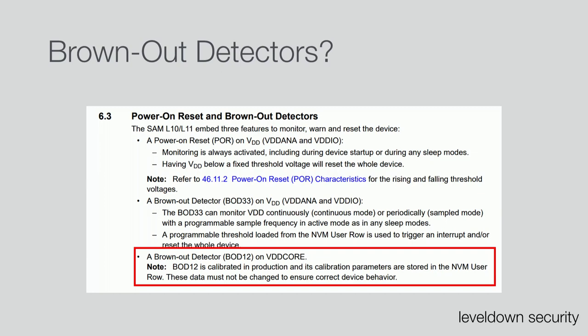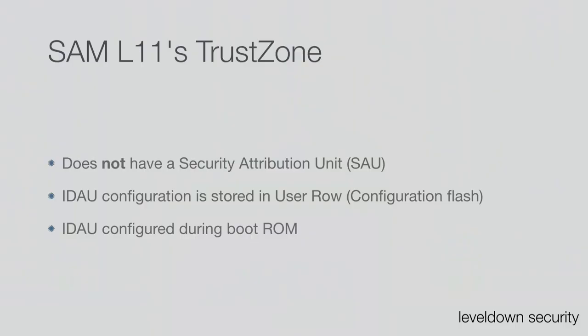To be fair, when I talked to Microchip, they mentioned they absolutely want to communicate that this chip is not hardened against hardware attacks — but I can see how somebody reading it would get the wrong impression. The SAML11 does not have a Security Attribution Unit. Instead it only has the Implementation Defined Attribution Unit, and the configuration for this IDAU is stored in the user row — basically the configuration flash, also called fuses in the data sheet.